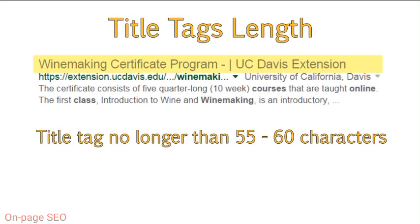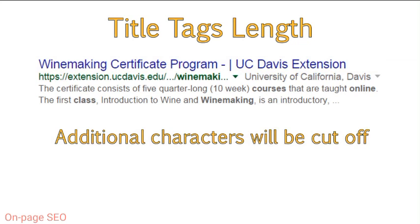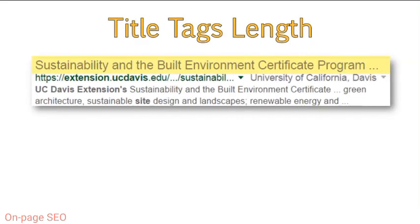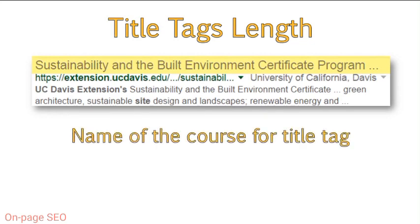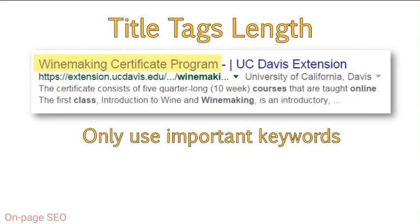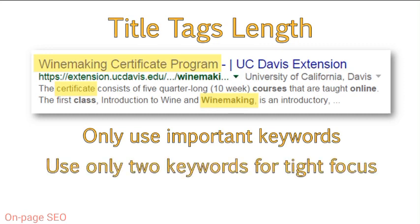While search engines will read title tags longer than 60 characters, additional characters will get cut off in search results and can lead to a poor user experience, which can impact visits to your site. In the second title tag example shown here, you can see that the webmaster has used the name of the course for the title tag — it is far too long and leads to an unappealing search result. To keep your title tag short and concise, make sure you are only using the most important keyword or keywords for your page. It is recommended you do not focus on more than two keywords in the title tag. This not only helps cut down on length, but ensures you have a tight keyword focus, making it more relevant and easier to rank.